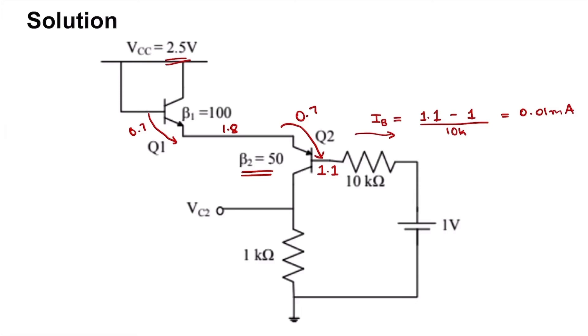Knowing the beta of the PNP transistor, we can get the collector current as beta times the base current. Beta is 50, so this is 50 times 0.01, that's 0.5 milliamps.